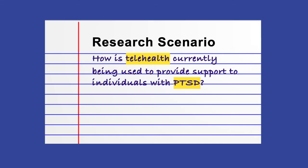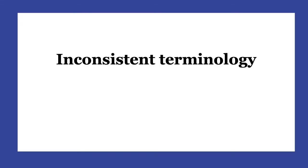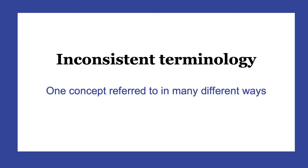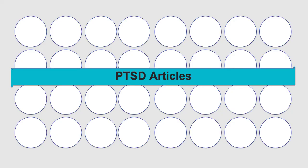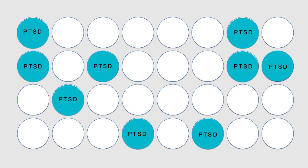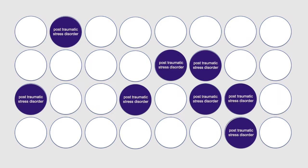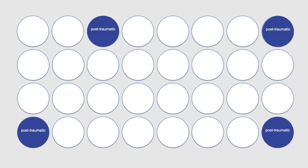To search this topic efficiently and effectively, you'll need to incorporate index terms into your search. To better understand what index terms are and why they matter, we need to look at a common problem that occurs when searching — that one concept may be referred to by authors in the field in many different ways. Let's say these circles represent all of the articles that have been published on PTSD. But if we search by the term PTSD, we'll only capture a small set of these articles. That's because authors aren't always using this term in their papers; they might be using post-traumatic stress disorder, or they might use a hyphen between post and traumatic.